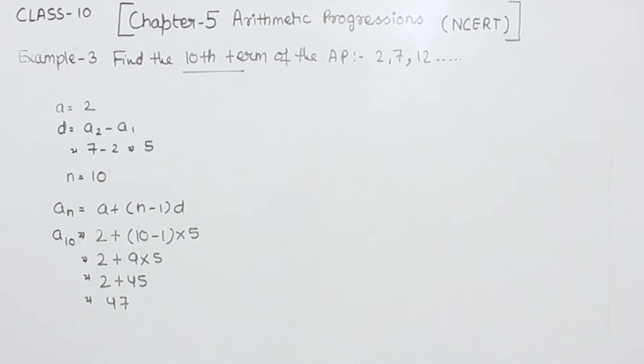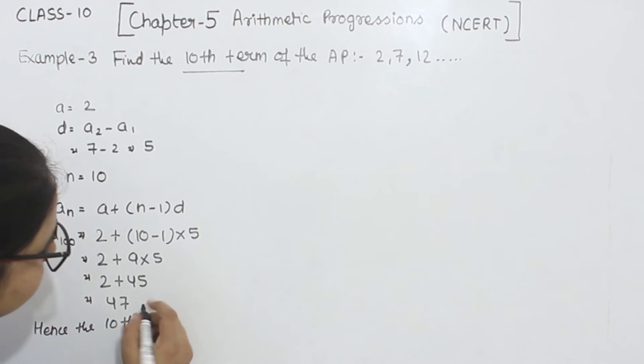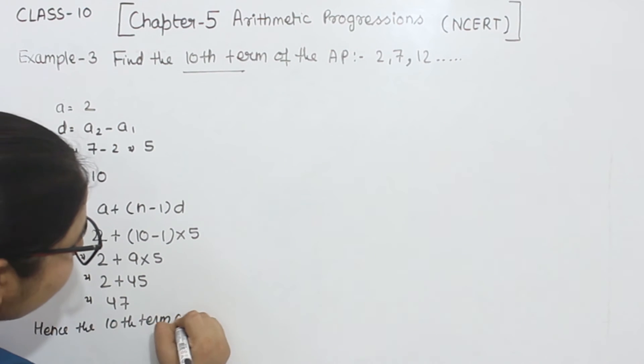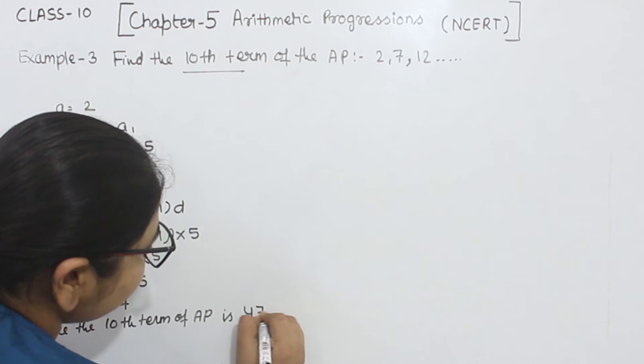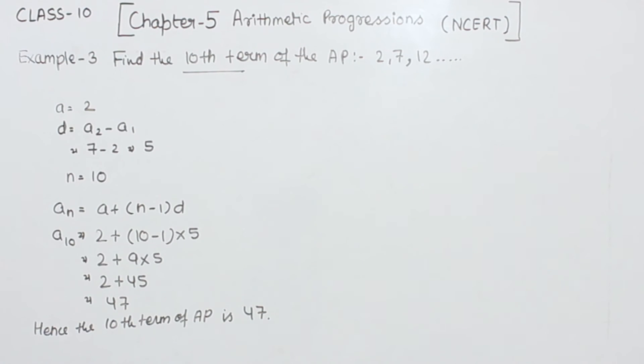So the 10th term of the AP is 47. This is example number 3. In the next video we will start with example number 4.